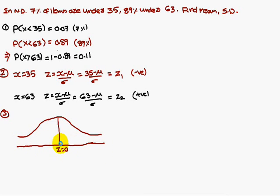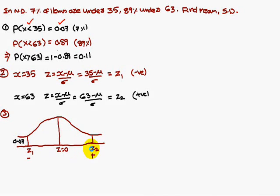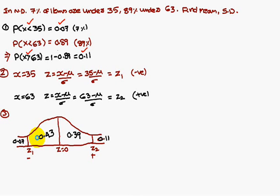Consider a bell-shaped curve with z = 0 at center. Place z1 (negative) on the left-hand side and z2 (positive) on the right-hand side. The area to the left of z1 is 0.07, and x greater than 63 gives area 0.11 on the right. To the left of z = 0, total area is 0.5; so 0.5 − 0.07 = 0.43. Similarly, to the right of z = 0: 0.5 − 0.11 = 0.39.